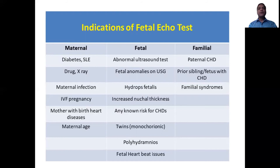Fetal indications include when the fetus has an abnormal ultrasound test in any trimester of pregnancy, hydrops fetalis where there is fluid collection on the heart, body, and skin, increased nuchal thickness commonly found on first trimester ultrasound by the radiologist, twins, and fetal heartbeat disorders detected during routine ultrasound.